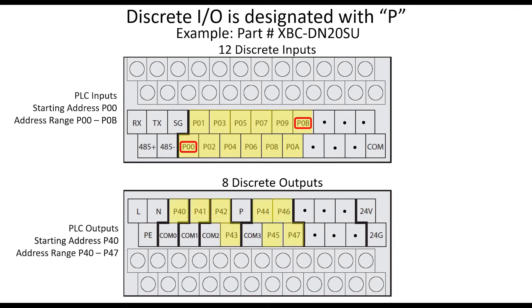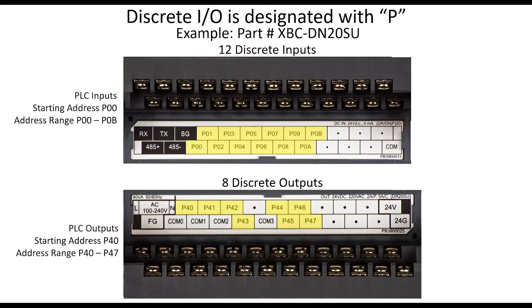The E and SU type PLC discrete outputs begin at P40. The 8 outputs shown are addressed P40 through P47. Labels inside the terminal covers on the PLC associate the I/O address with the proper screw terminal.